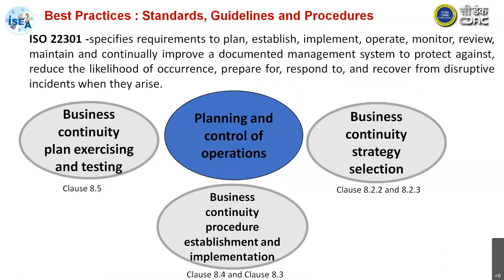ISO 22301 is the business continuity management system standard. It specifies the requirements to plan, establish, implement, operate, monitor, review, maintain, and continually improve a documented management system to protect against, reduce the likelihood of occurrence, prepare for, respond to, and recover from disruptive incidents when they arise.